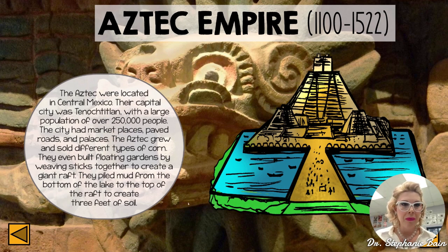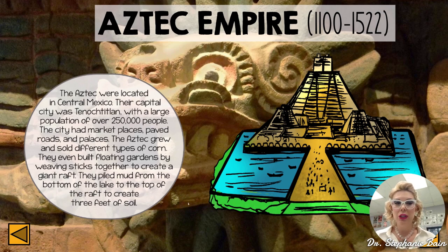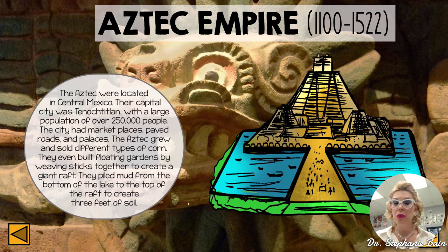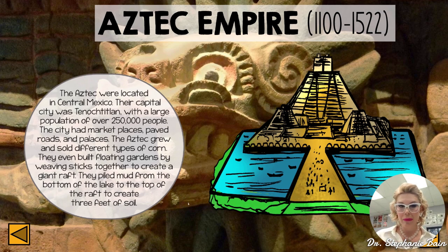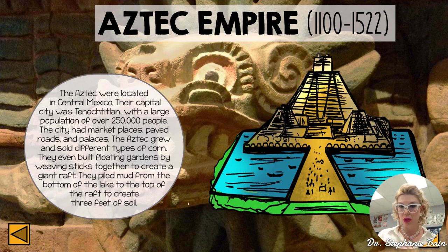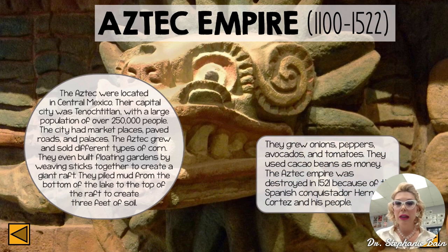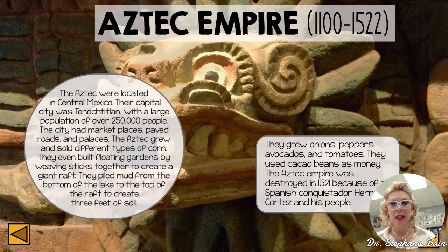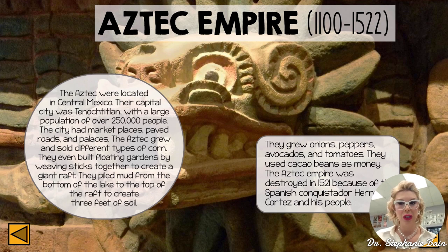The Aztecs were located in central Mexico; their capital was Tenochtitlan, present-day Mexico City, with a large population of over 250,000 people. They grew and sold different types of corn — a staple food — and built floating gardens called chinampas by weaving sticks together, piling mud from the lake bottom to create three feet of soil for growing. They also grew onions, peppers, avocados, and tomatoes, and used cacao beans as currency for trade. The Aztec Empire was destroyed in 1521 by Spanish conquistador Cortez.